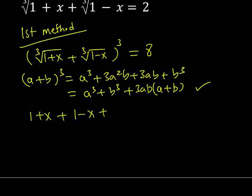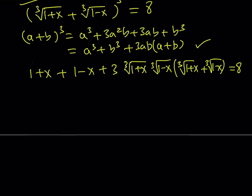and then plus 3 times the first term without cubing, times the second term, multiply by the sum of the term. So that's going to be the cube root of 1 plus x plus the cube root of 1 minus x. And the whole thing is going to equal 8. Great.